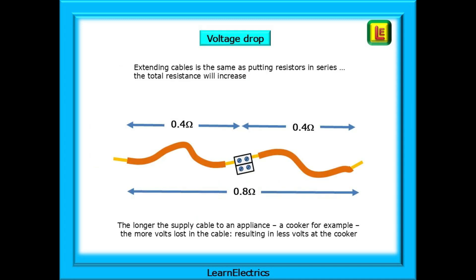Extending cables is the same as putting resistors in series. The total resistance will increase. Copper cable will have its own very small resistance. And here, we've joined two 0.4 cables together, with the result that the overall cable resistance is now 0.8 ohms. The longer the supply cable to an appliance, a cooker for example, the more volts lost in the cable, resulting in less volts at the cooker. Less volts at the cooker means it takes longer to boil a pan of water. Perhaps only seconds, but somebody has to pay for that extra electric.